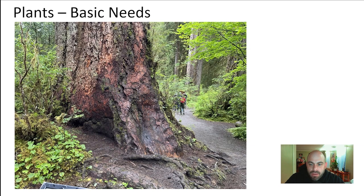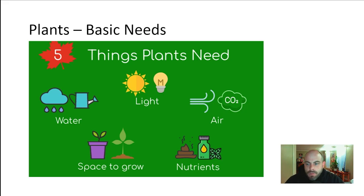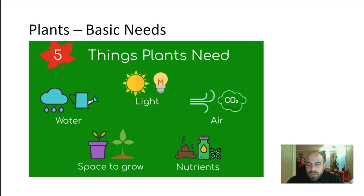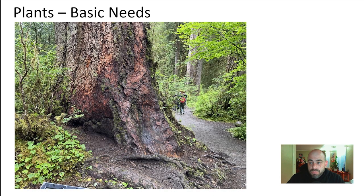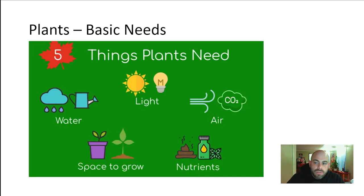Plants need five things. They need water — water supplies a steady stream of electrons so that photosynthesis happens, and there are also many other cellular functions it supports. They need light, obviously necessary for photosynthesis. They need air because it contains CO2, but also oxygen and other components the plant needs. They need space to grow — some plants require more space than others. And they need nutrients, which they generally get from the soil.